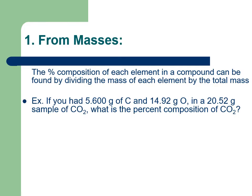Let's try it from the masses first. The percent composition of each element in a compound can be found by dividing the mass of each element by the total mass—same way we do any percentage. So let's try it out with this particular question. We have 5.600 grams of carbon, 14.92 grams of oxygen, and the sample is going to weigh 20.52 grams.